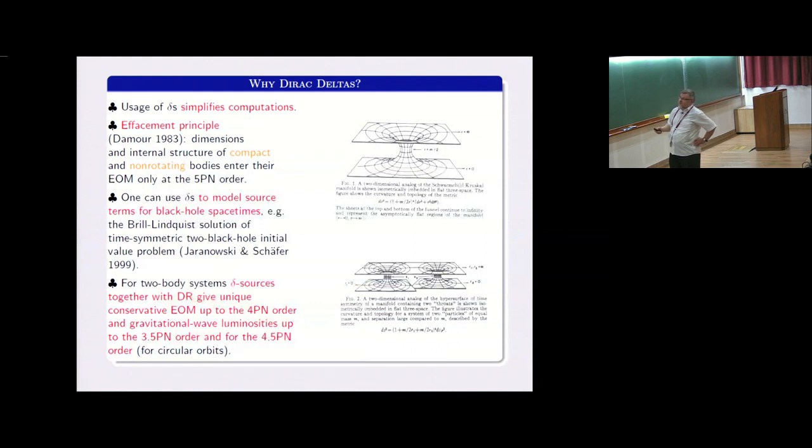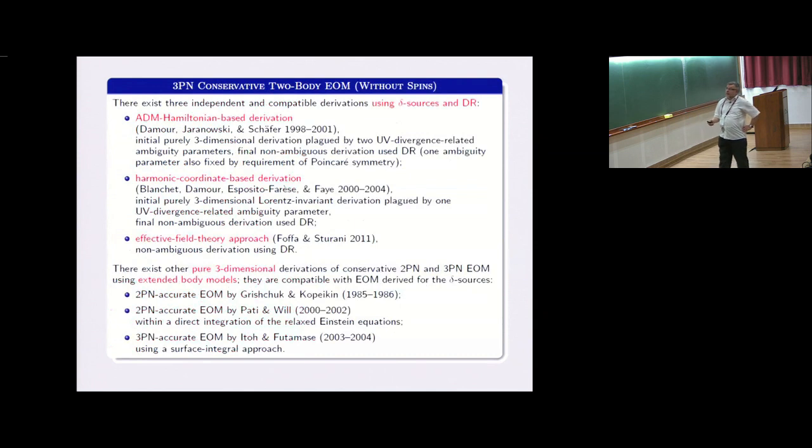But Dirac deltas can do more in general relativity. We know that quite useful, for example, from numerical relativity point of view, is the Brill-Lindquist solution of time symmetric two black hole initial value problems. And this solution was originally obtained by studying the vacuum constraint equations of general relativity, but this solution can be easily recovered using the energy momentum tensor with Dirac deltas. And finally, strong posterior arguments that dimensional regularization together with using Dirac delta sources finally give unique conservative equations of motion up to the 4PN order, and unique gravitational wave luminosities up to 3.5 PN order, and more recently also for 4.5 PN order, at least for circular orbits.